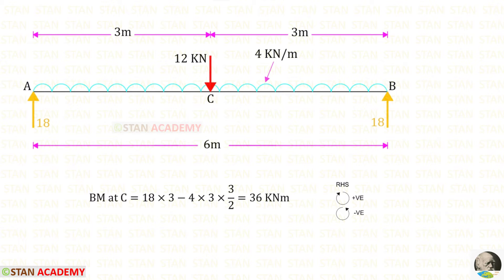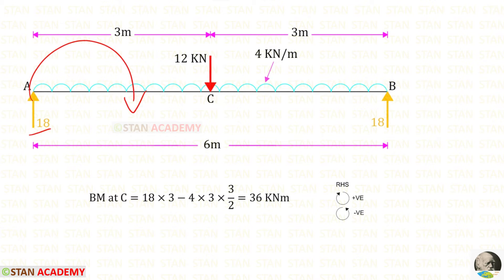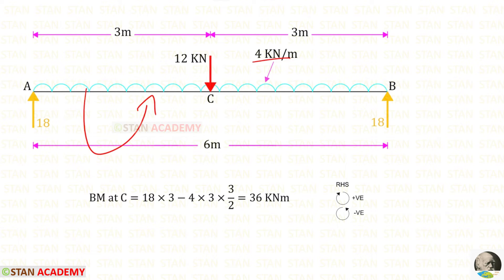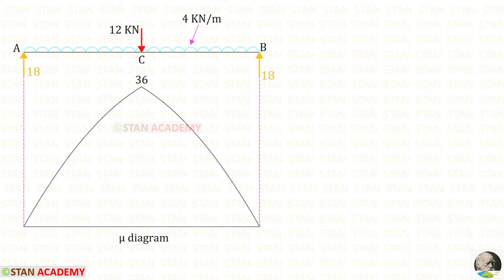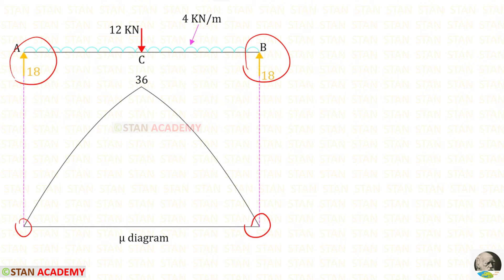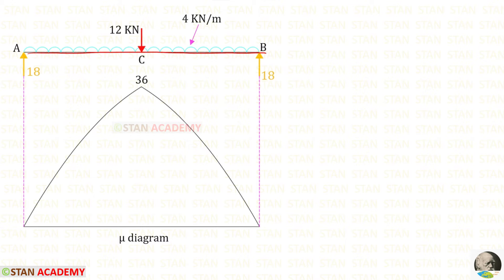Now let us find the bending moment at point C, the center, working from point A towards the right. Clockwise will be positive and anti-clockwise will be negative. Ra acts clockwise at a distance of 3m, and the UDL acts anti-clockwise. We get 36 kilo newton meter. For the simply supported beam, the bending moment is zero at the ends and 36 at point C. Since there is a UDL for the full span, the bending moment diagram is parabolic.